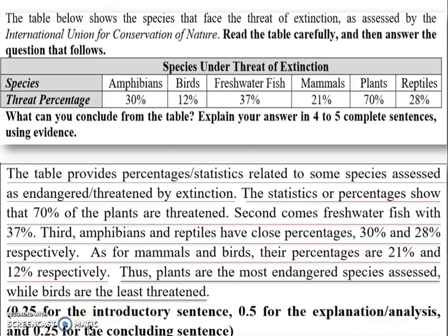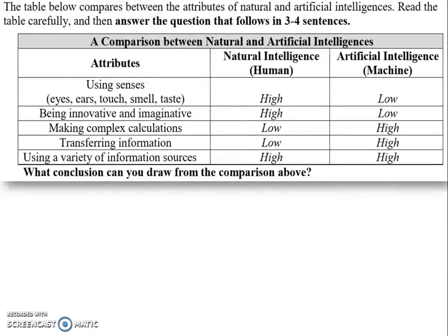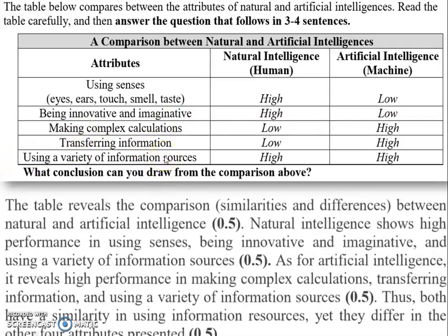That's how the grade is divided: introductory sentence, explanation or analysis of the numbers, and then the concluding sentence. Here's another example — the difference is that we don't have numbers, just 'high' and 'low.' The table compares the attributes of natural and artificial intelligence. Read it carefully and answer in three to four sentences. The introduction can come directly from the given: 'The table reveals the comparison between natural and artificial intelligence.'